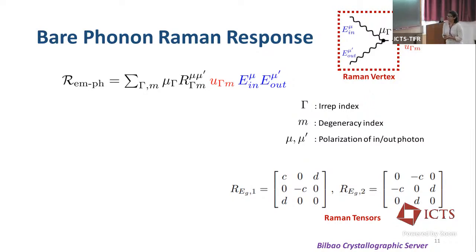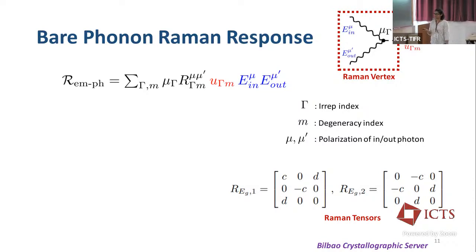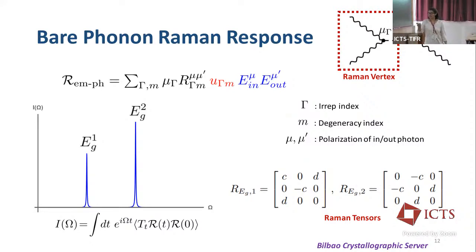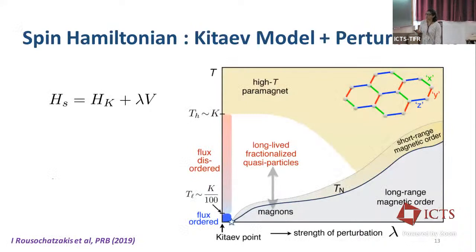With our phonons, we are ready to calculate the bare phonon Raman response. We write down the Raman operator in the Loudon-Fleury regime. This diagram couples the phonons to the incoming and outgoing photons, and the coupling strength is mu_gamma. The Raman tensors are in the EG representation. To get the intensity, we calculate this correlation function, which is a delta function peaked at the bare phonon frequencies. However, our phonons live in a lattice that also has magnetic degrees of freedom.